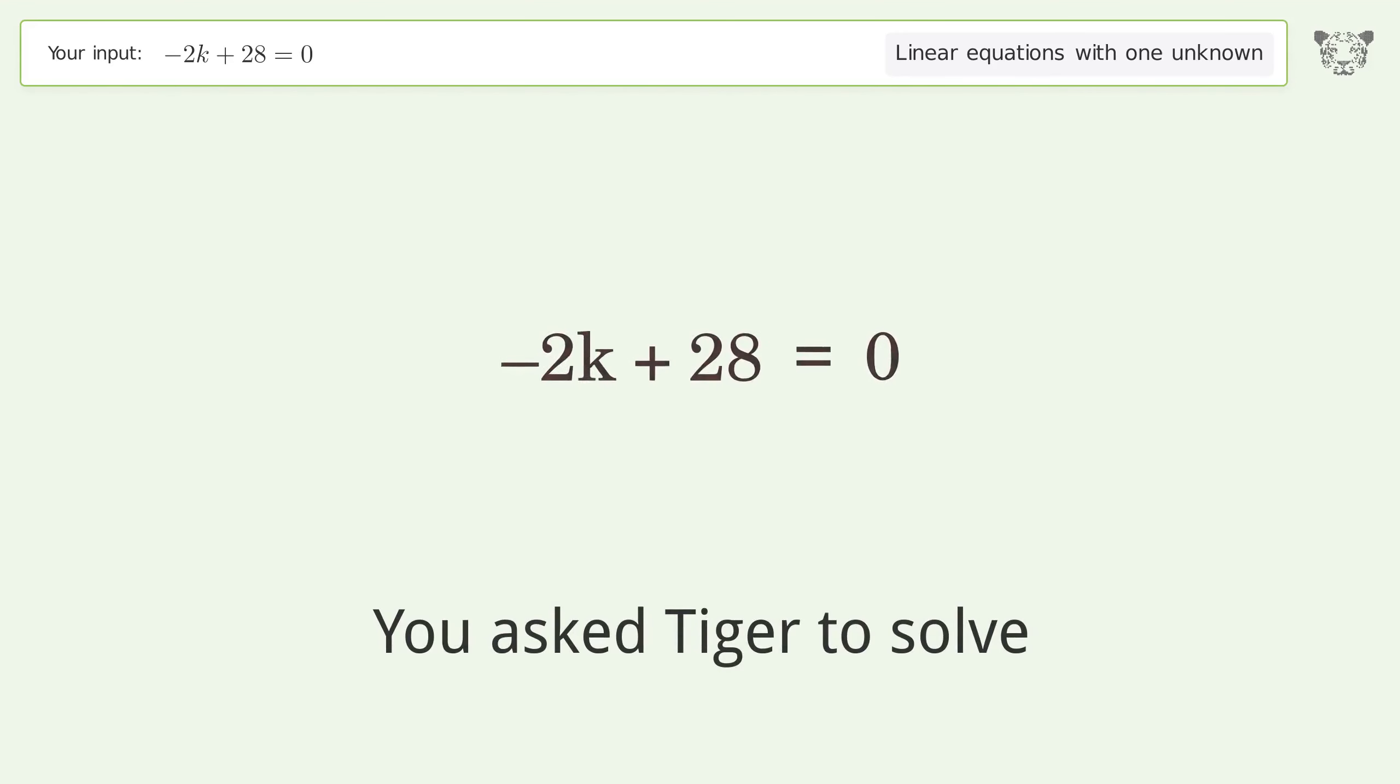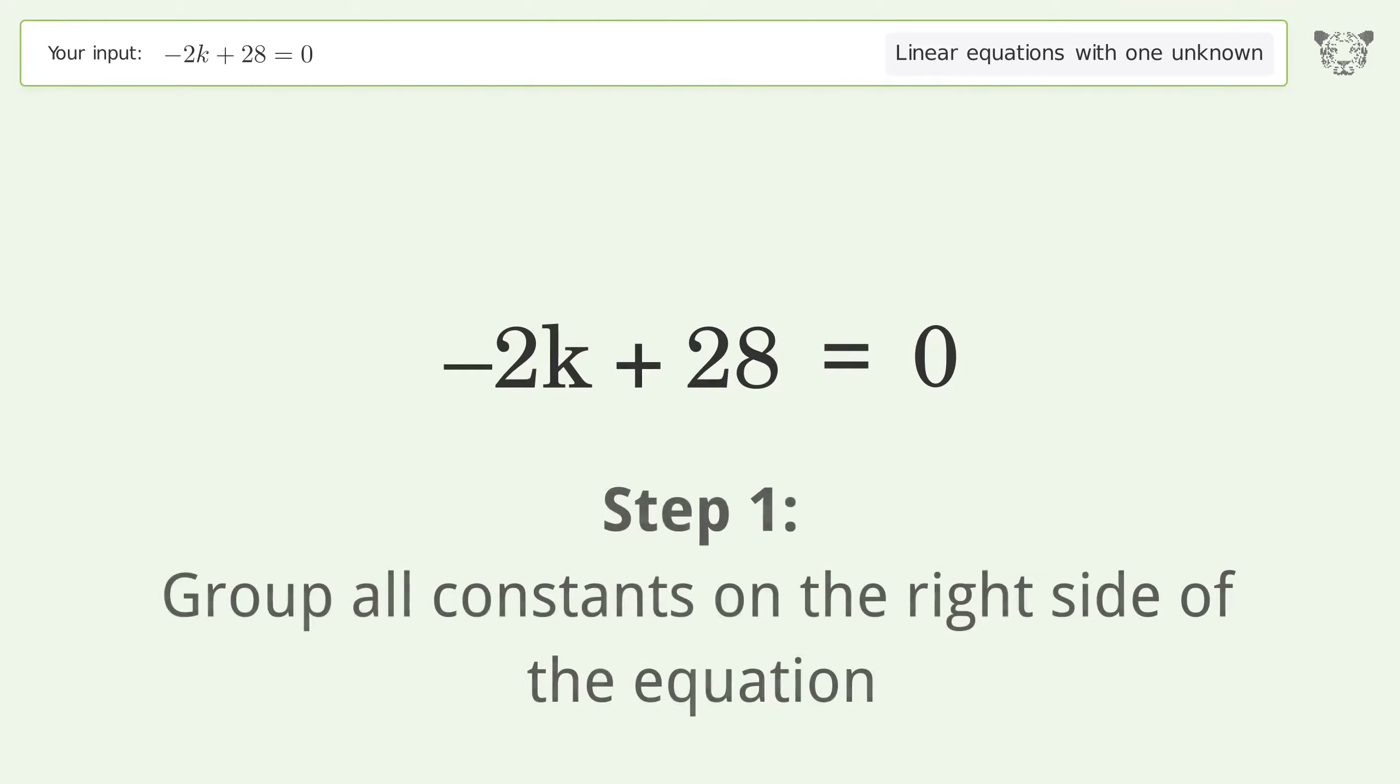You asked Tiger to solve this linear equation with one unknown. The final result is k equals 14. Let's solve it step by step. Group all constants on the right side of the equation.